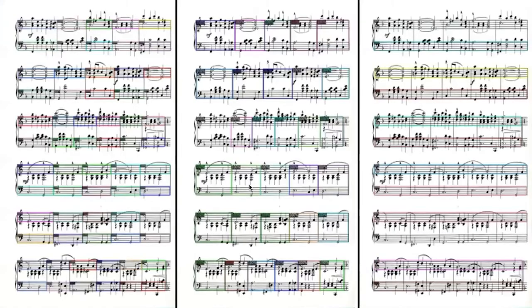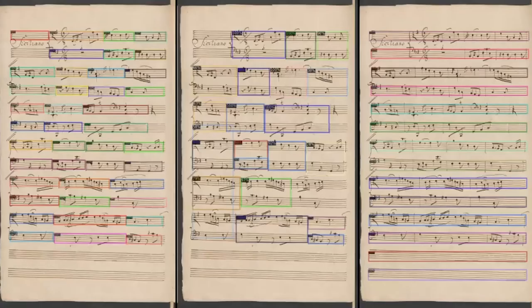I have some results as pictures. On the left side we have measures, in the center system measures, on the right we have staves. These are for typeset music, so you can at first glance see they are quite good for typeset music.